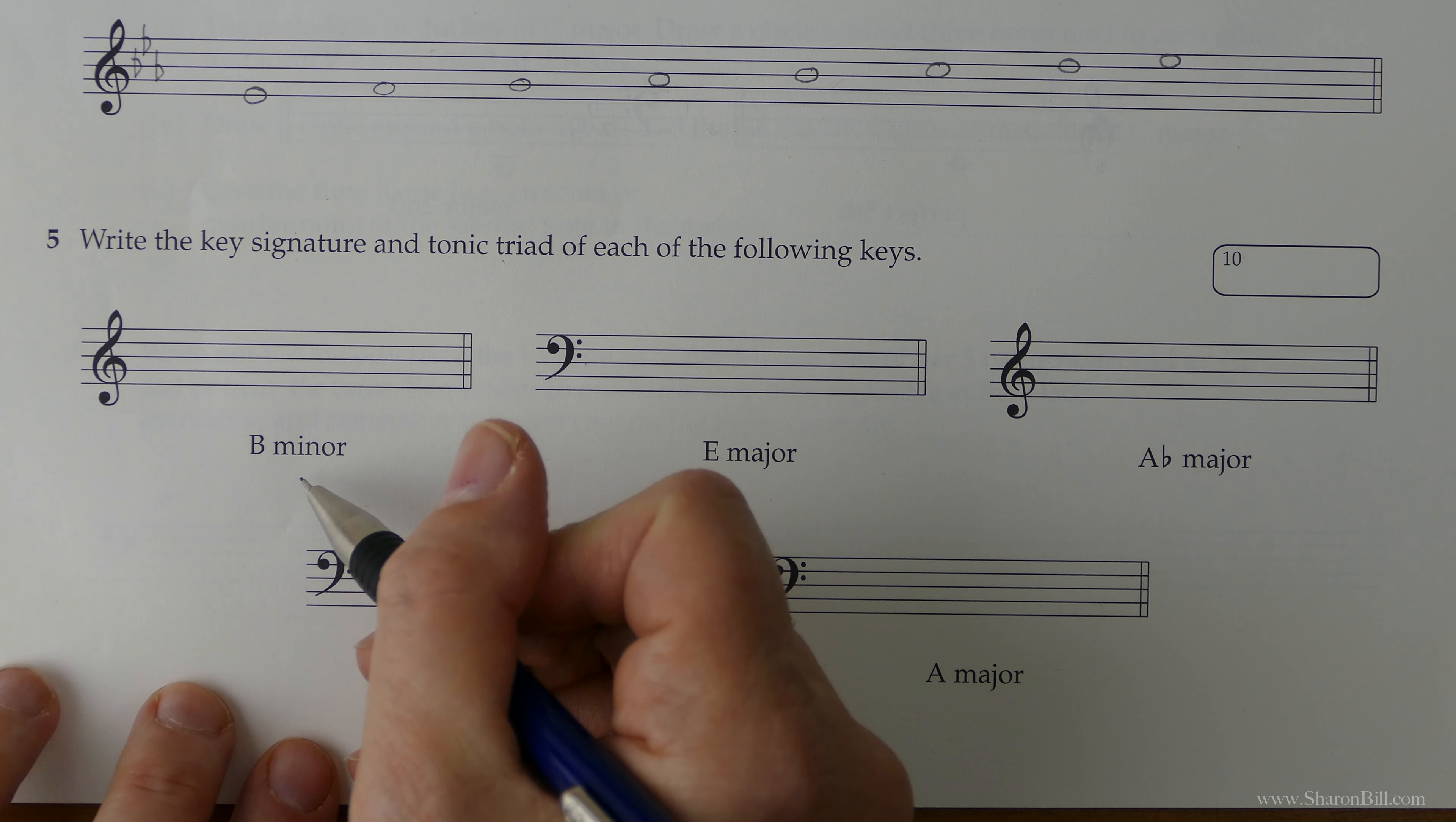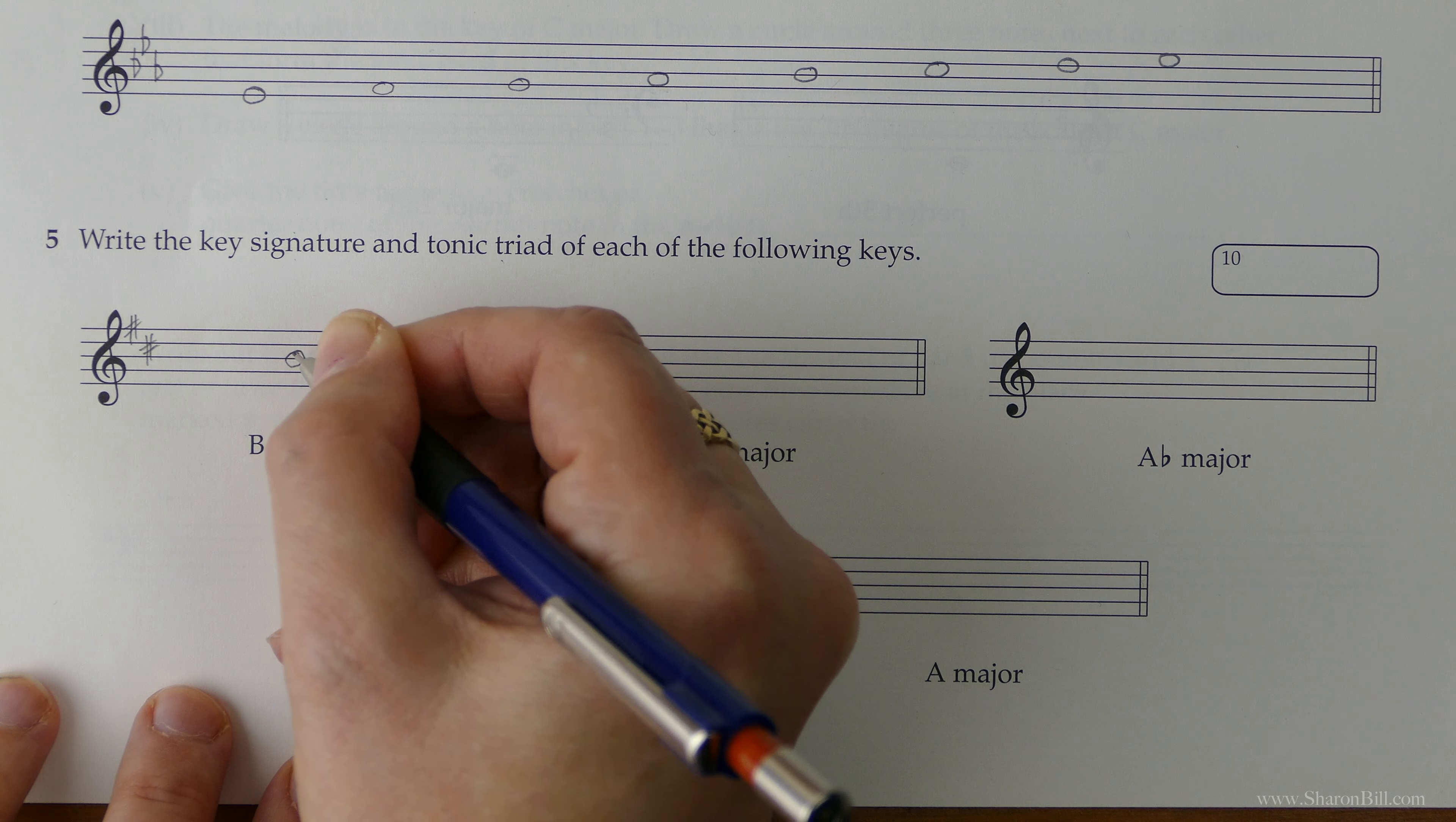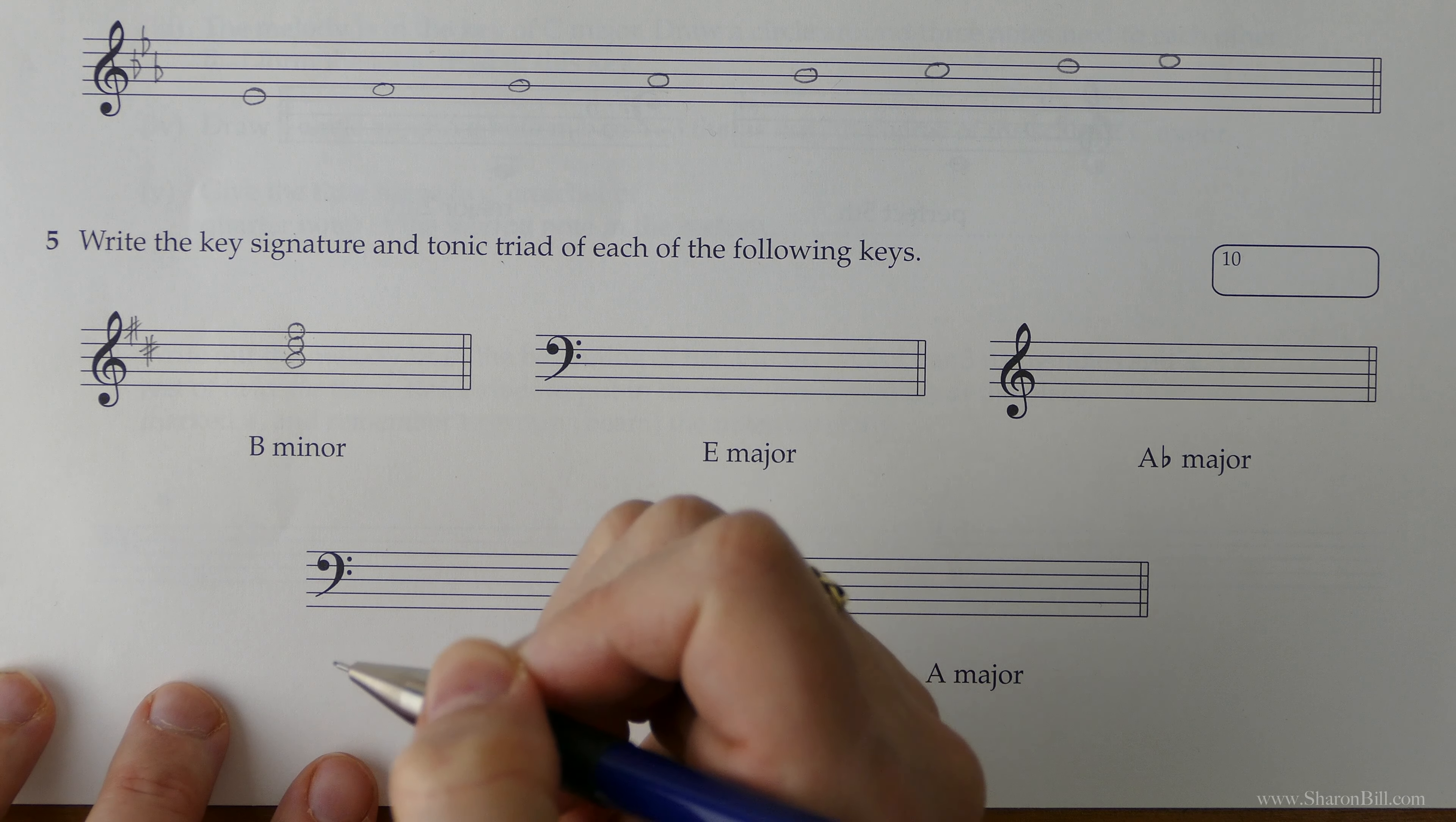And so we've got a few things to do here. We need to write the key signature, and then we need to write the tonic triad. So the key signature of B minor. B minor is related to D major, and it has a key signature of F sharps and C sharps. We're in the treble clef, so just position those carefully. And then the tonic triad begins on B. That's our tonic. And we want the first, third, fifth. And when we're counting 1, 3, 5, if it's a line that you're beginning on, it's line, line, line, because the 2 and the 4 are the spaces. If you're beginning on a space, it's just space, space, space. So that's easy peasy.